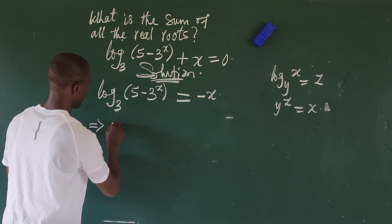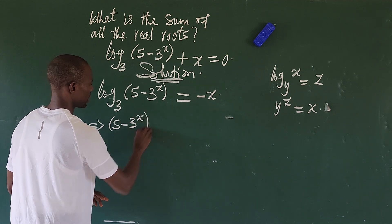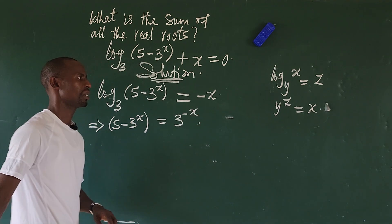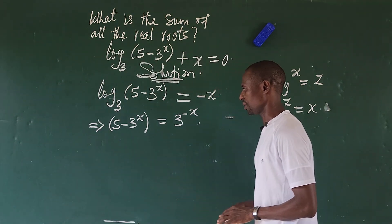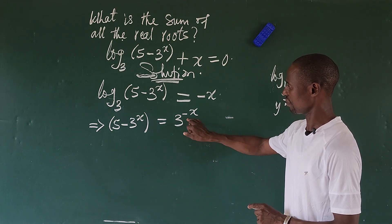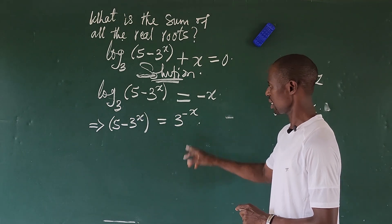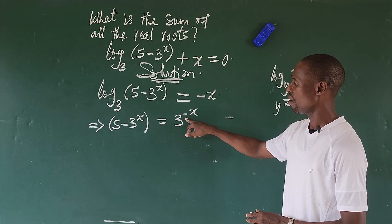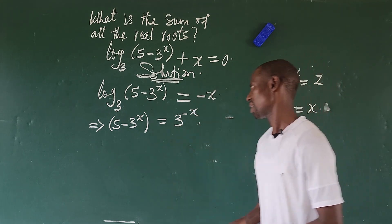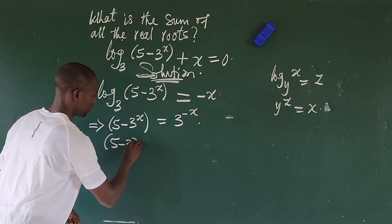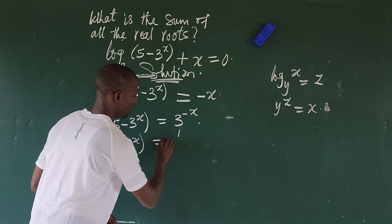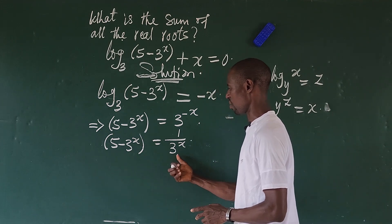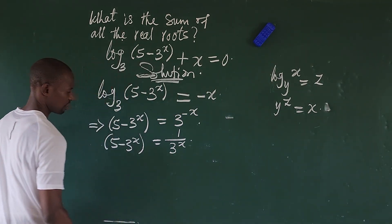This now implies we're going to have 5 minus 3 to the power of x, plus bracket, equal to 3 to the power of minus x. We look carefully — we just have to rewrite this because we are having 3 to the power of x here. So let's see how we can bring 3 to the power of x from here. We find the reciprocal of this. So therefore we're going to have 5 minus 3 to the power of x equal to 1 over 3 to the power of x.